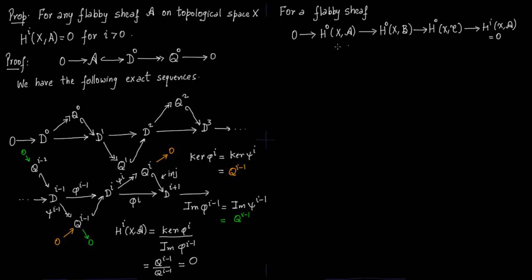So for flabby sheaves, we have the sequence of global sections is also exact. A few lectures ago we were talking about it was only left exact and not completely exact. And flabby sheaves solved this problem.